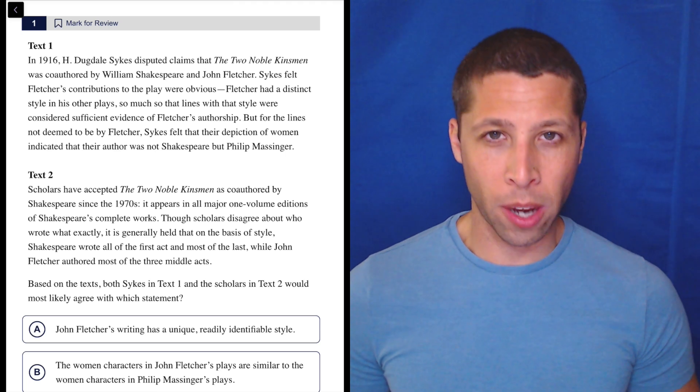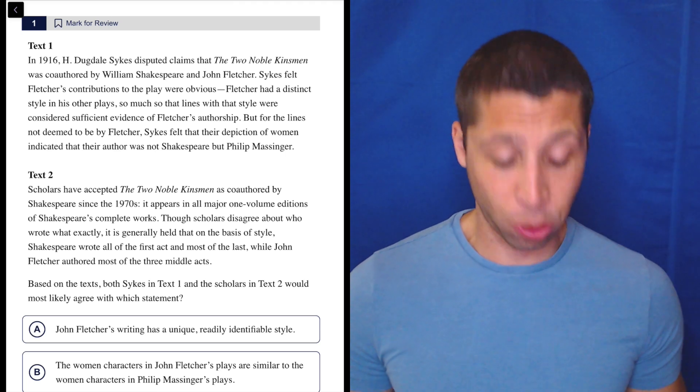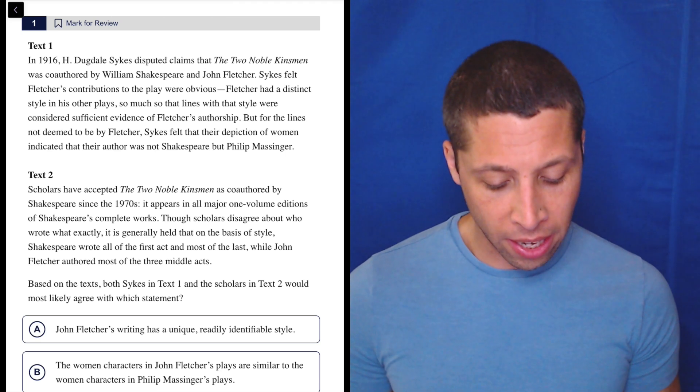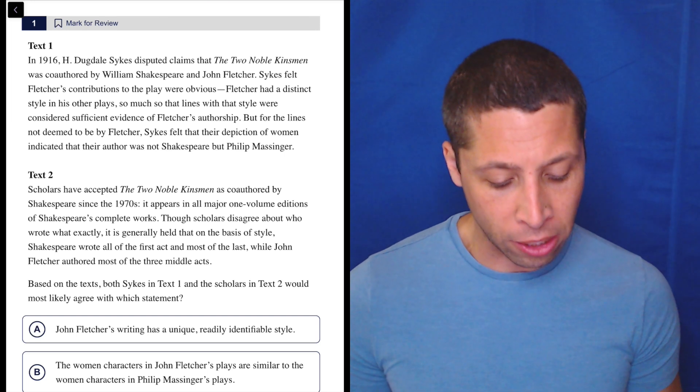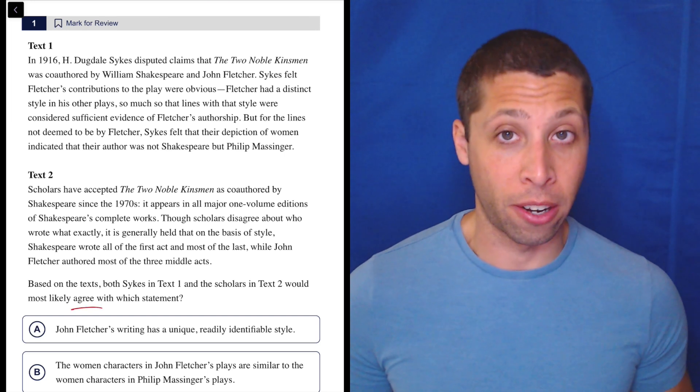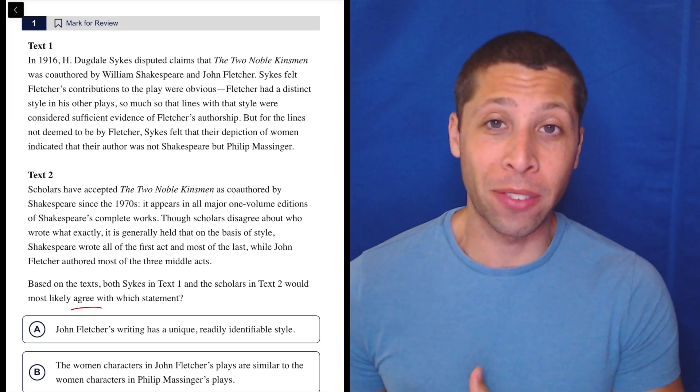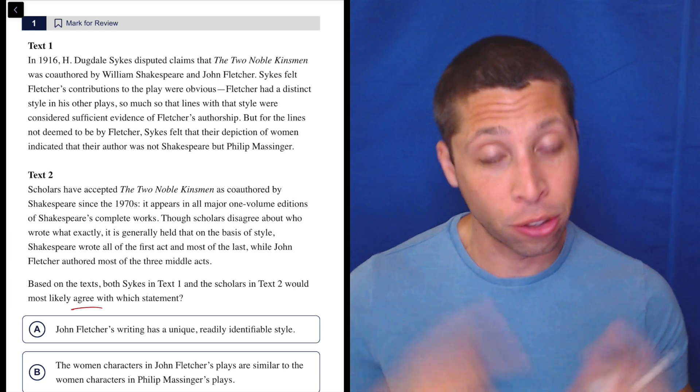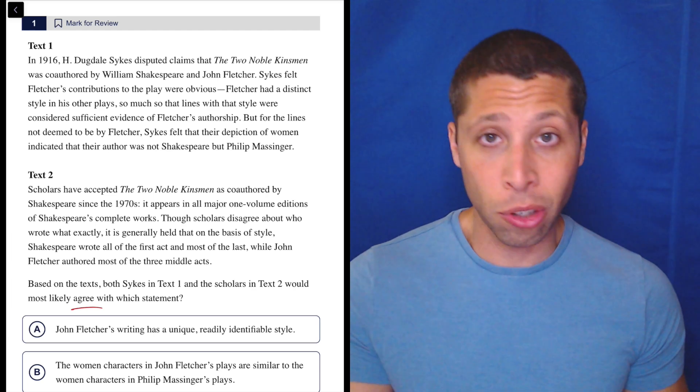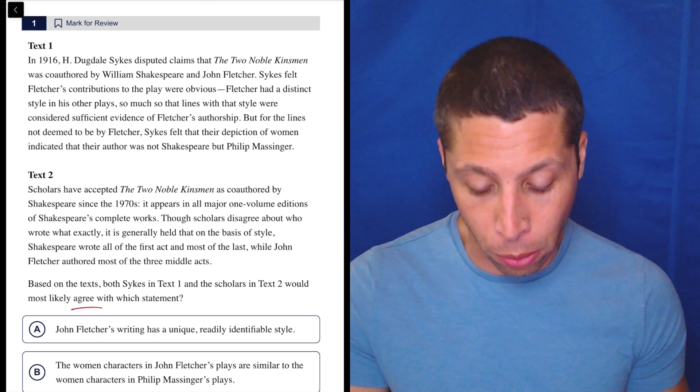It's very important with these double-text questions to make sure you understand the actual question. In this case, they want us to figure out what these two texts agree on. They might disagree on everything else, but it's what they agree on that matters. As I read, I'm trying to keep that in mind. I would just go in order; there's no reason to flip the order here.